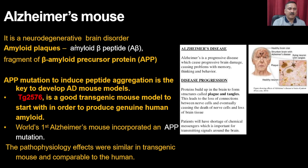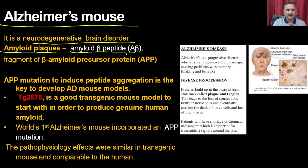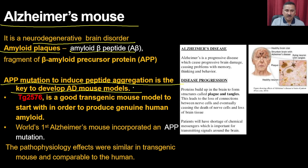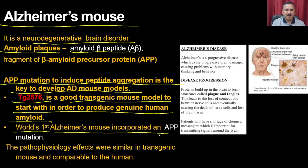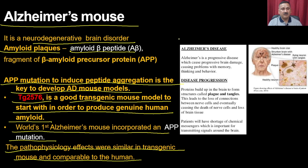The Alzheimer's mouse model addresses a neurodegenerative brain disorder in which amyloid plaques or amyloid beta peptide fragments accumulate in the brain. APP mutation to induce protein aggregation is the key to developing the AD mouse model. TG2576 is a good transgenic mouse model to start with; human APP mutations were incorporated and the pathophysiological effects were similar in the transgenic mouse and comparable to those in humans. These mouse models can be used to screen compounds and develop new treatments.